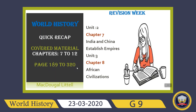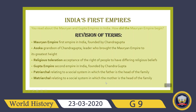The total covered material between February and March is Chapters 7 to 12 — that means 7, 8, 9, 11, and 12. We have three classes a week, so this week I will cover two or three chapters per class, revising the main points. From Unit 2, I have taken Chapter 7 and Chapter 8 for today's class: Chapter 7 is 'India and China Establish Empires' and Chapter 8 is 'African Civilizations.'